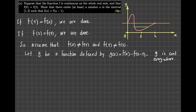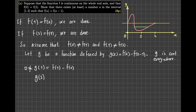Now let me calculate g of 1. Replacing x with 1 gives g of 1 equals f of 1 minus f of 0. Because of our assumption that f of 0 is not equal to f of 1, this quantity is not zero. For g of 2, replacing x with 2 gives g of 2 equals f of 2 minus f of 1. Since f of 1 is not equal to f of 2, this is also not zero.